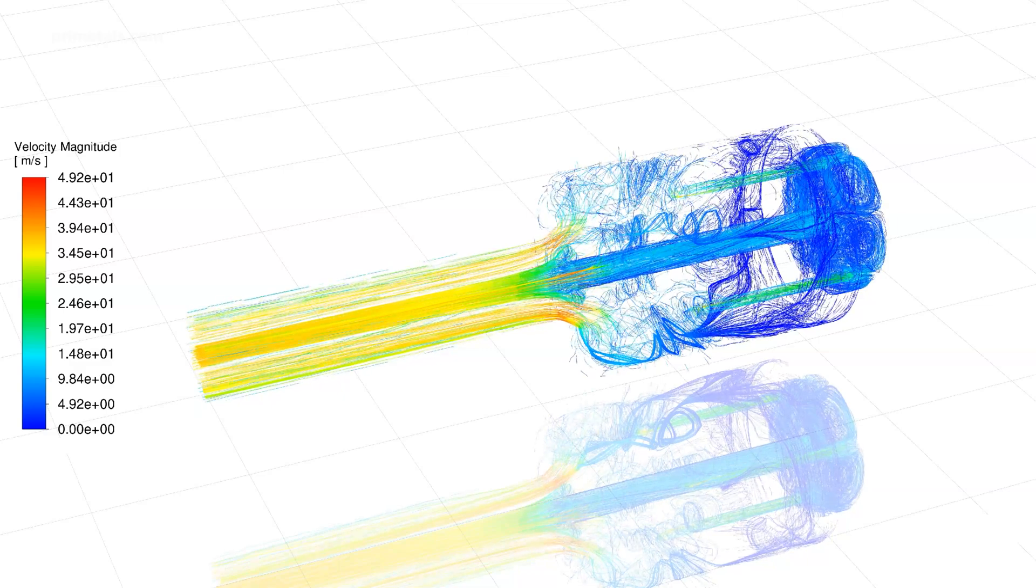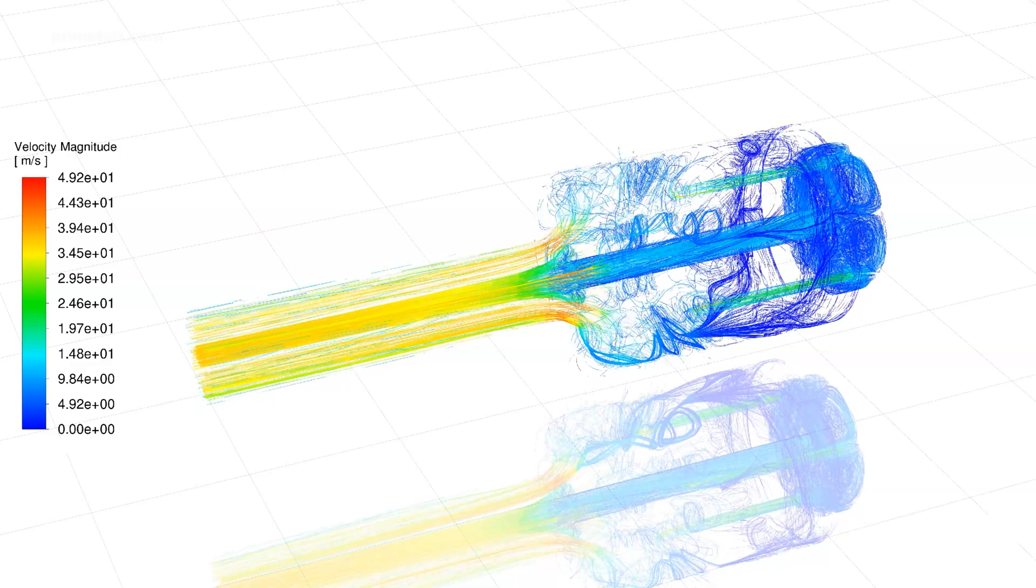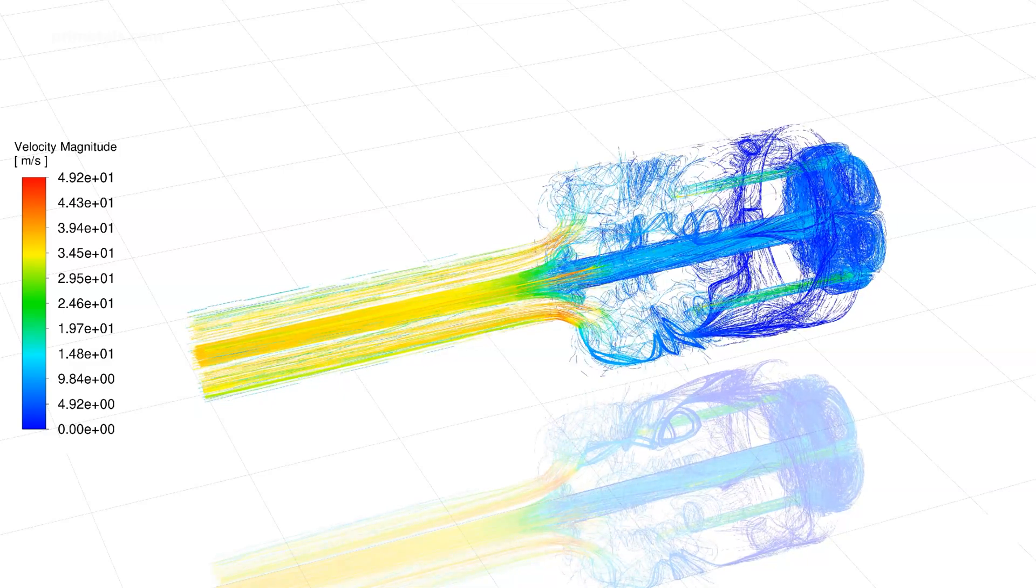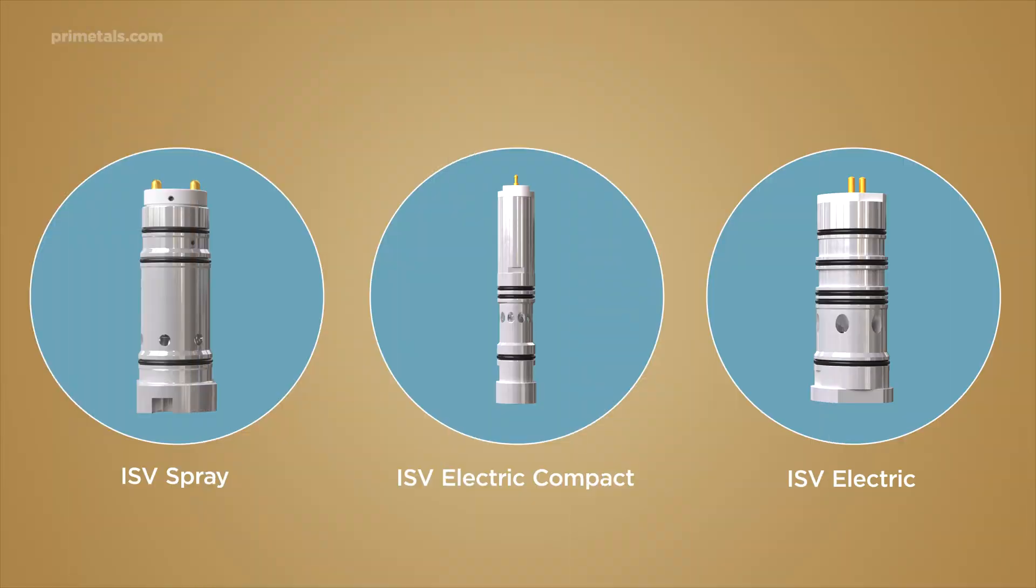Valves are flow optimized to minimize pressure drop, reducing stress on the coolant system and increasing reliability. There are three different types of valves within the ISV Spray System family.